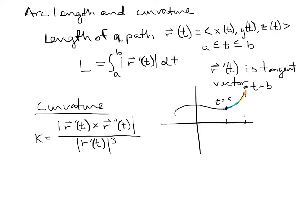So finding curvature is quite a process. First, find r prime. Second, find r double prime. Third, take the cross product. Fourth, find the magnitude of that cross product. Then go back to r prime, find its magnitude, cube it, and plug everything into the formula.